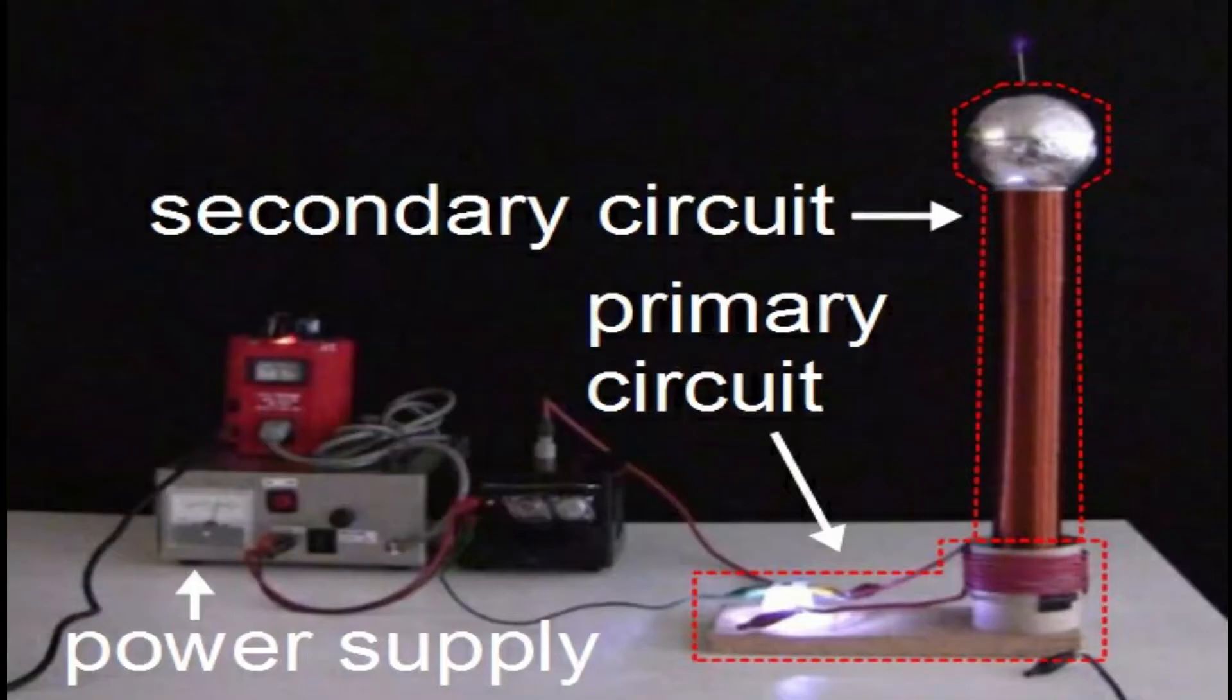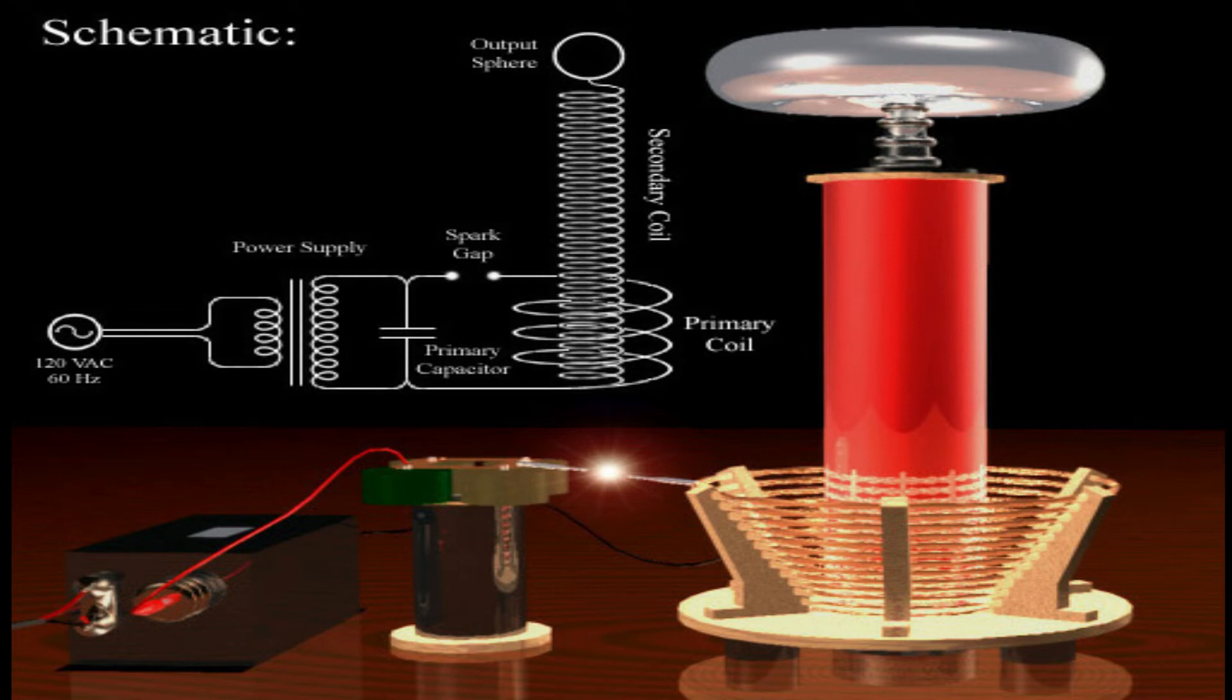In a perfectly designed Tesla coil, when the secondary coil reaches its maximum charge, the whole process should start over again and the device should become self-sustaining. In practice, however, this does not happen. The heated air in the spark gap pulls some of the electricity away from the secondary coil and back into the gap, so eventually the Tesla coil will run out of energy. This is why the coil must be hooked up to an outside power supply.